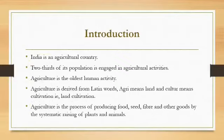Introduction: India is an agricultural country because two-thirds of its population is engaged in agricultural activities. Agriculture is one of the oldest human activities. Agriculture is derived from Latin words — 'agri' means land and 'cultura' means cultivation, which literally means land cultivation. Definition: Agriculture is the process of producing food, seed, fiber, and other goods by the systematic raising of plants and animals.